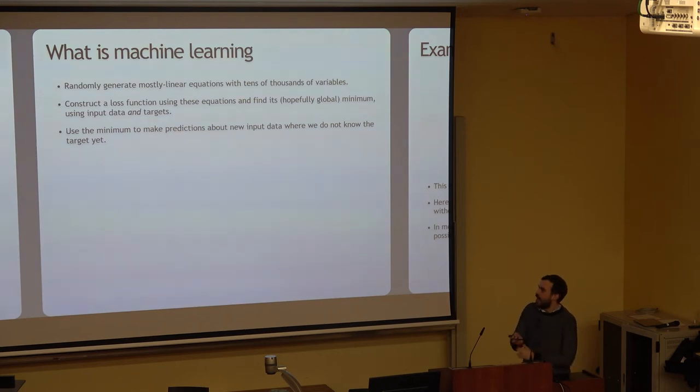So what is machine learning? I will give my totally opinionated, biased definition of it. You randomly generate mostly linear equations with tens of thousands of variables. If you took linear algebra in school and you remember AX plus BY equals something, just that longer and the matrix is bigger and randomly generated. And then you construct a loss function. If X and Y are the data that you know and A and B are the weights that you don't, there's some type of loss function that guides A and B to what they need to be.